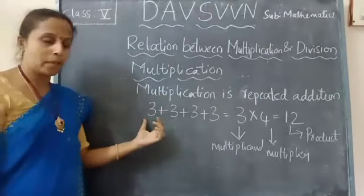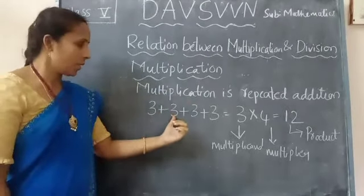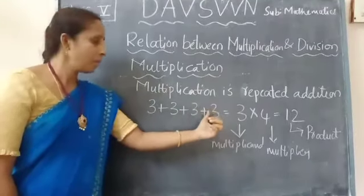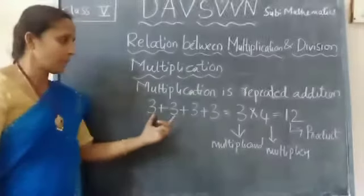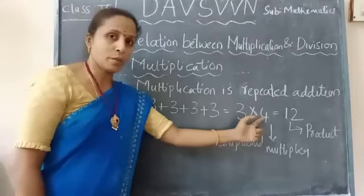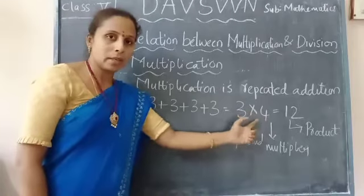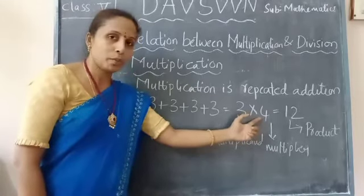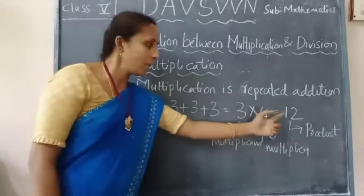We will see with an example: 3 plus 3 plus 3 plus 3. This can be written as 3 into 4. This is nothing but 3 times 4. 3 times 4 is 12.